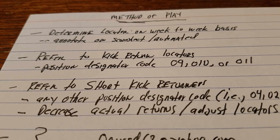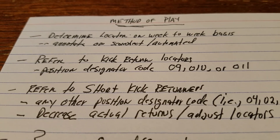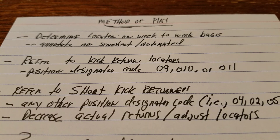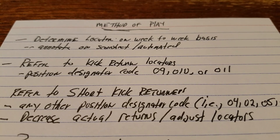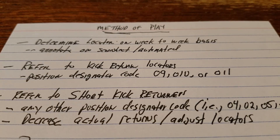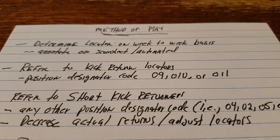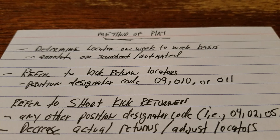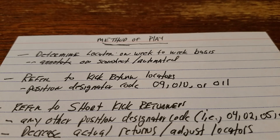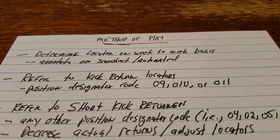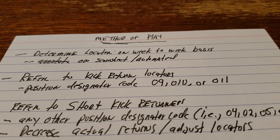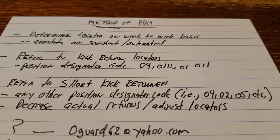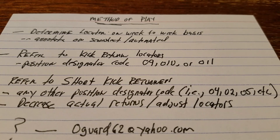Whenever the board indicates that the position designated code is 09, 010, or 011, you go ahead and either roll the dice or, if you're using them like I do, an automated locator — you are going to look at the kick returners column, the players designated as kick returners. Now, 011 was designated as an OC, and I get that. But the way that I view it is, it's a little shorter kickoff, and in my mind's eye the returner ran up and caught the ball at around the 8, 9, 10 yard line and then took off. If it's any other designation code — like 04, 02, 05 — that is when you refer to your short kick returners.